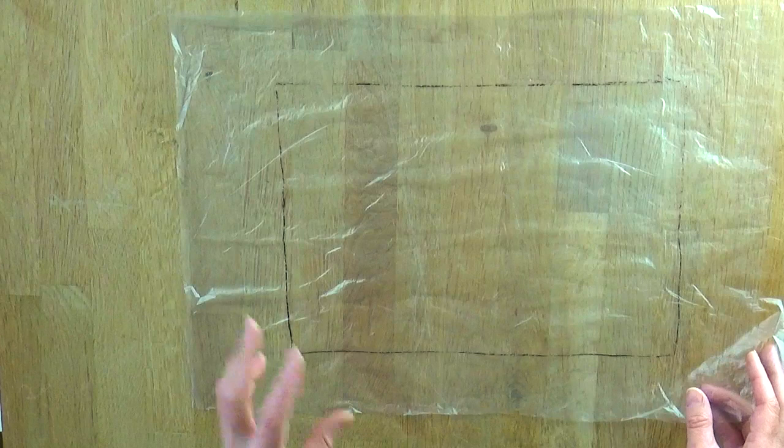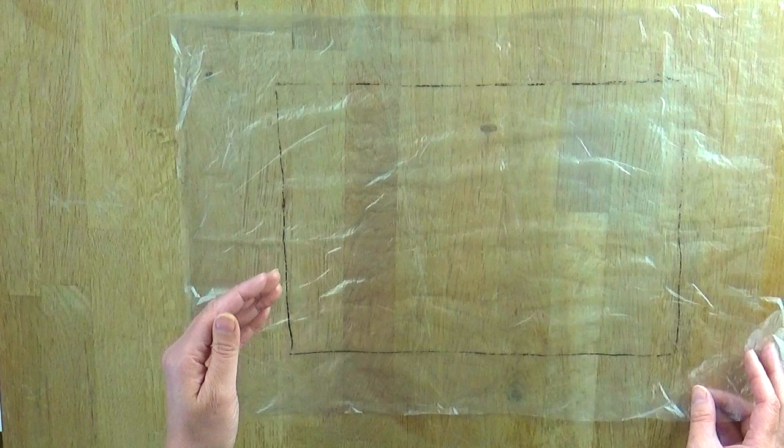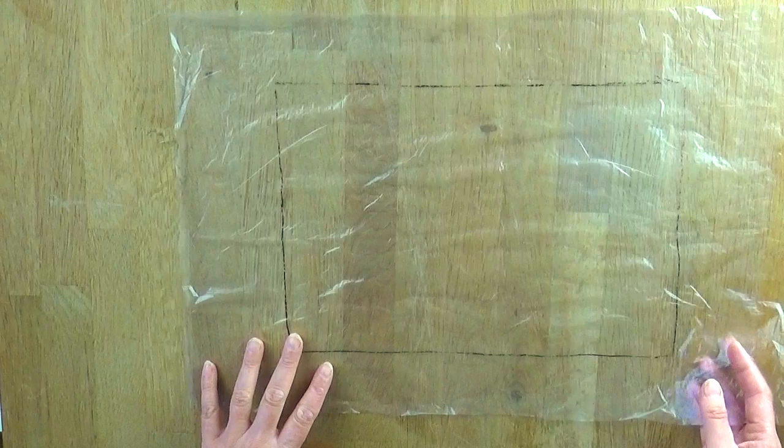And what it will do is, it almost creates a paper. It's like creating a paper that we're going to be able to cut shapes out of. And those shapes, a bit like fuzzy felt when you were growing up perhaps, you'll be able to lay those shapes like collage onto your design.